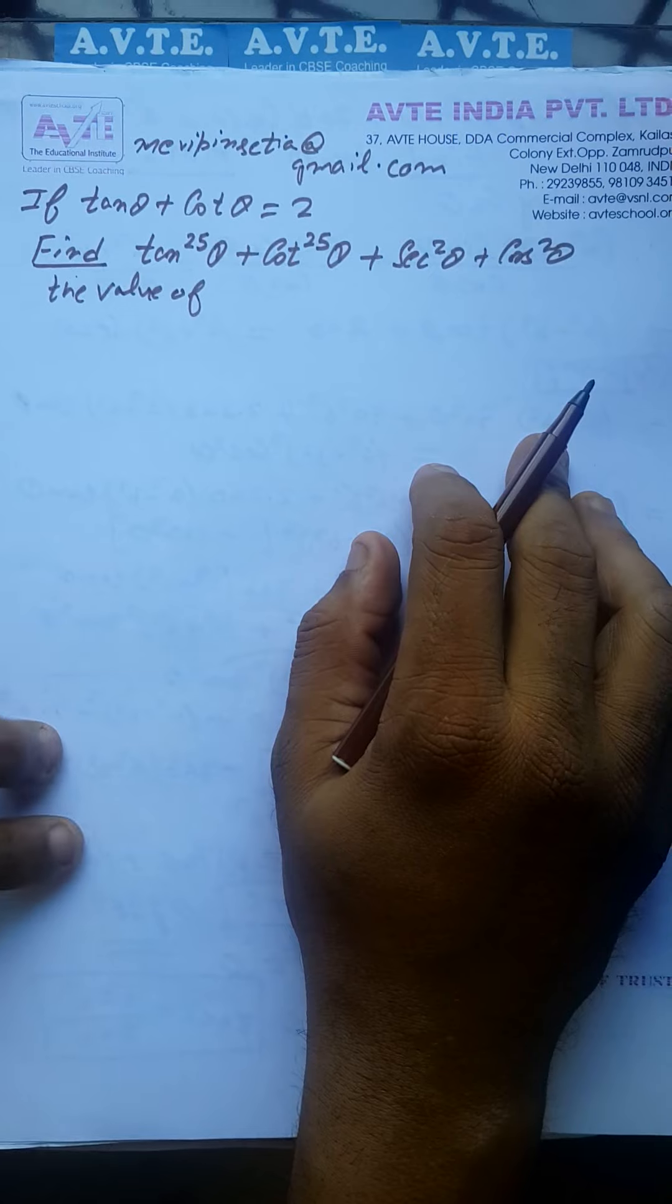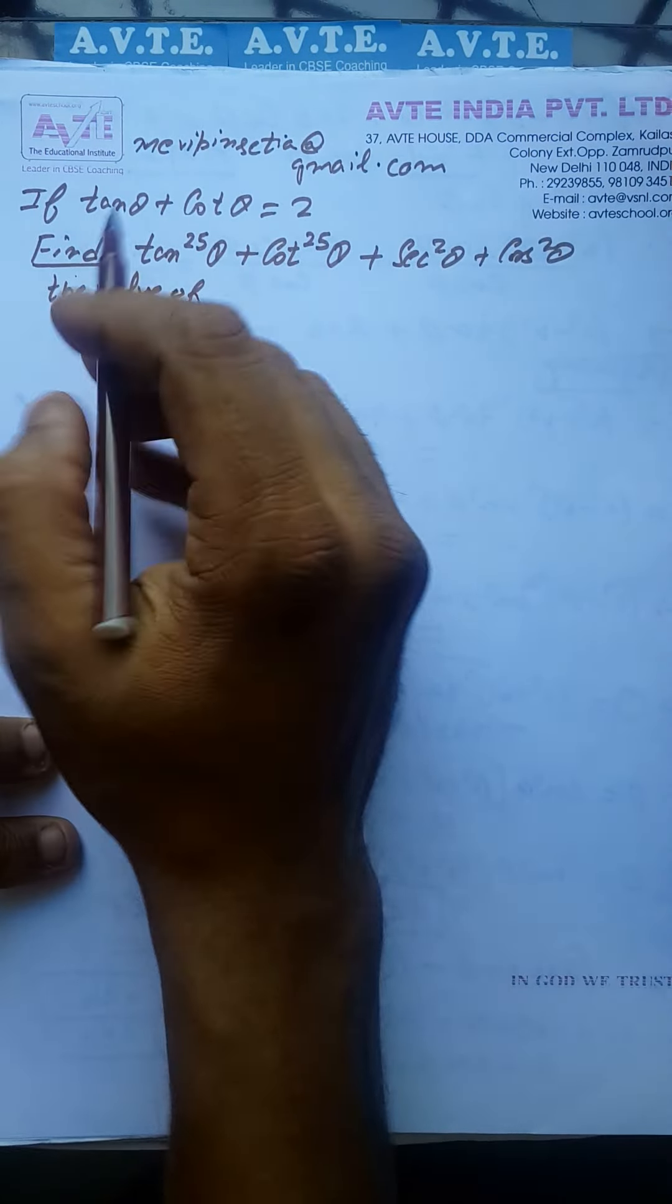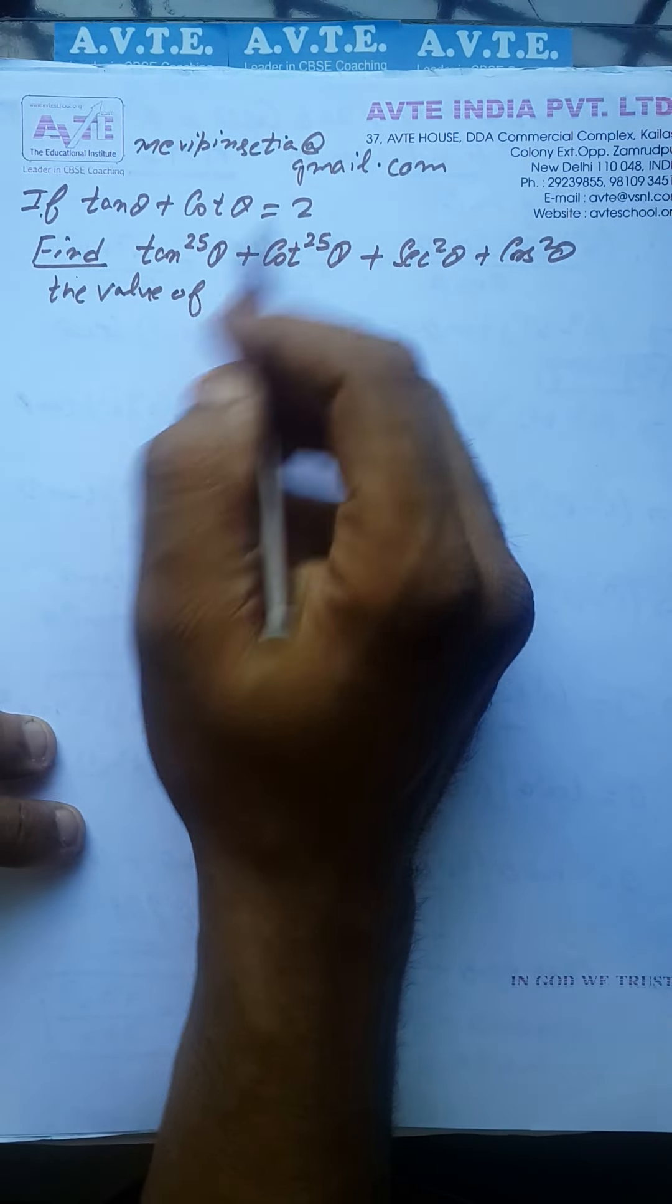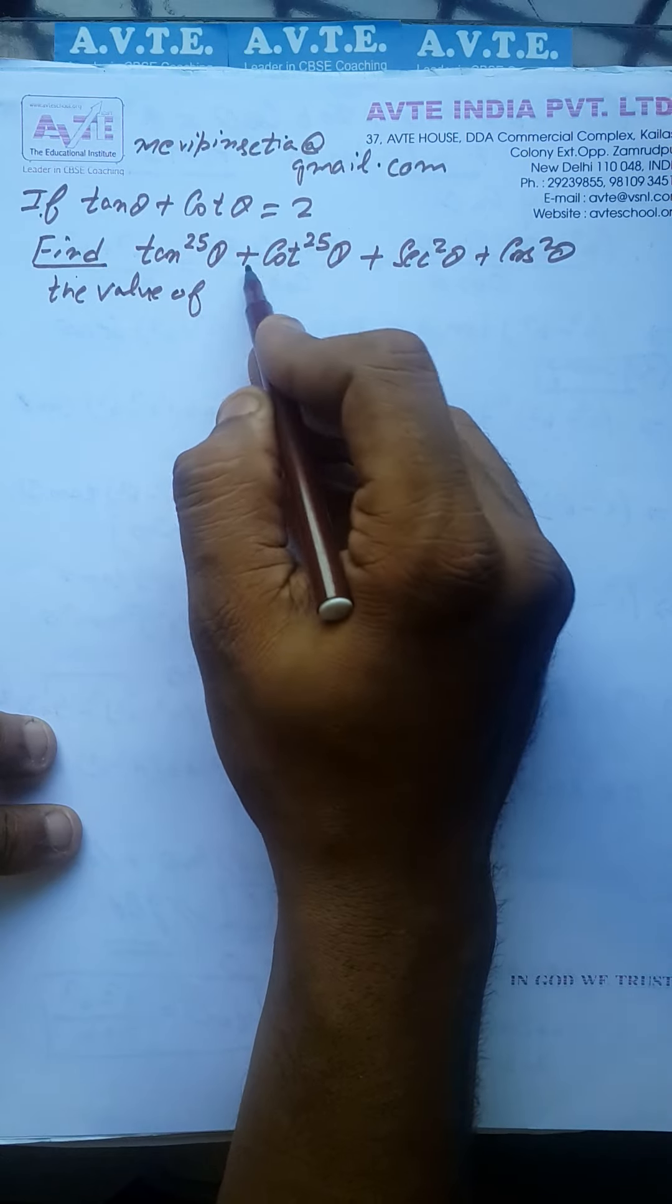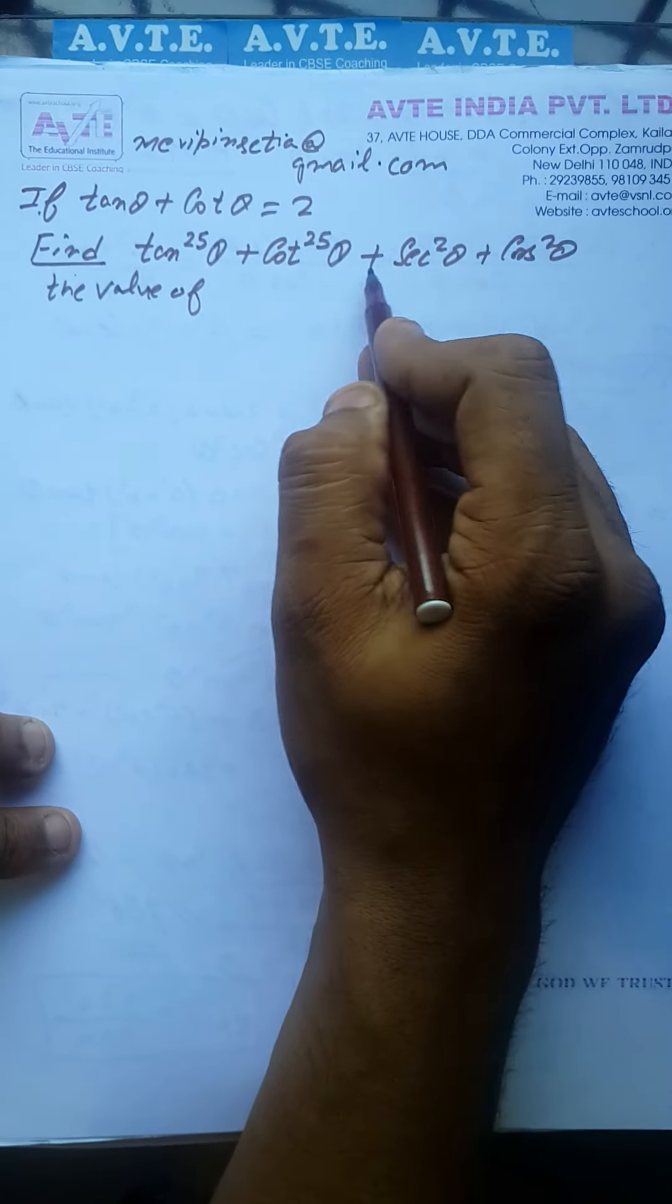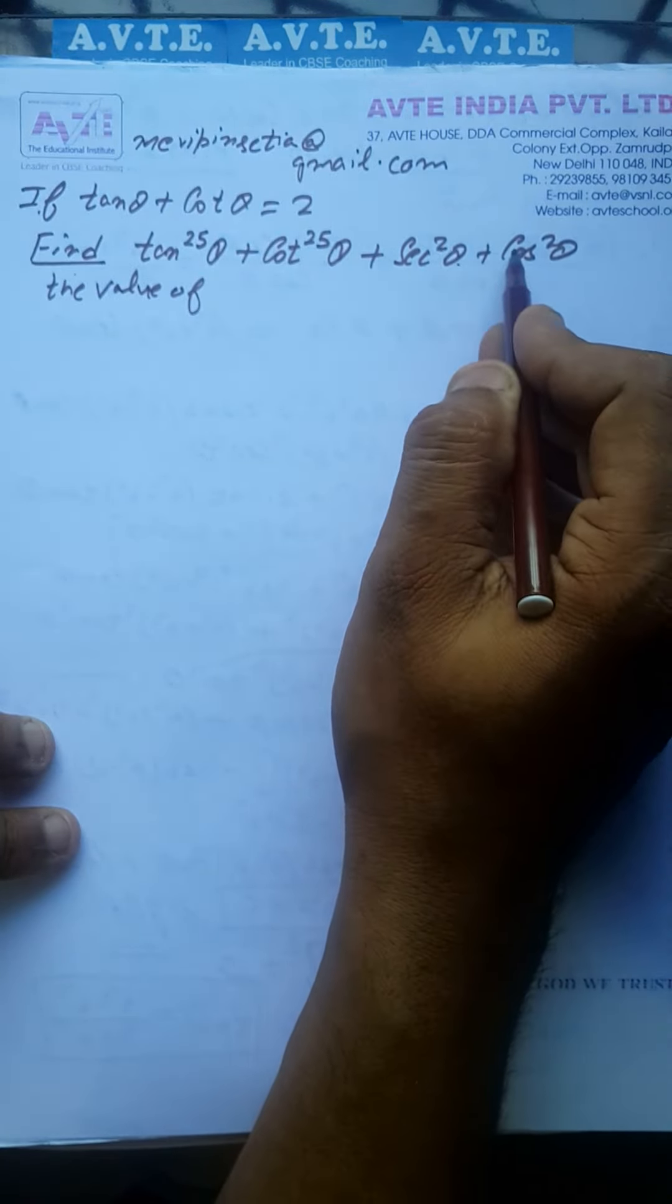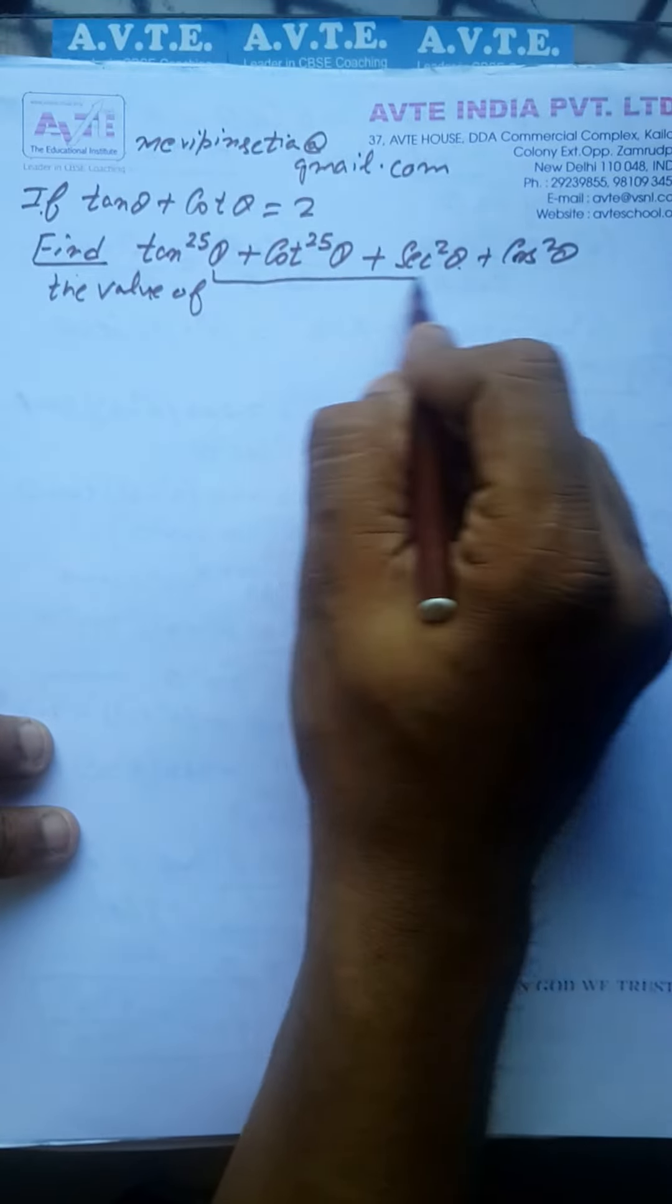It's a simple question but let's see this one. If tan theta plus cot theta equals 2, find the value of tan^25 theta plus cot^25 theta plus sec^2 theta plus cos^2 theta. We have to find this whole value.